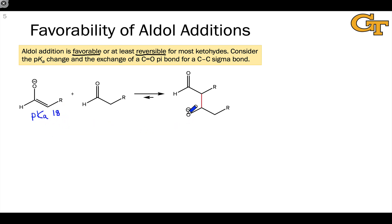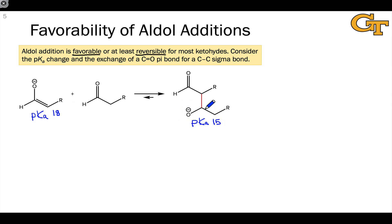The conjugate acid of an alkoxide is an alcohol, and the pKa here tends to be somewhat lower, about 15. So based on these pKa values, we can conclude that we're going from a less stable to a more stable anion, assuming the neutral molecules are roughly equal in stability.